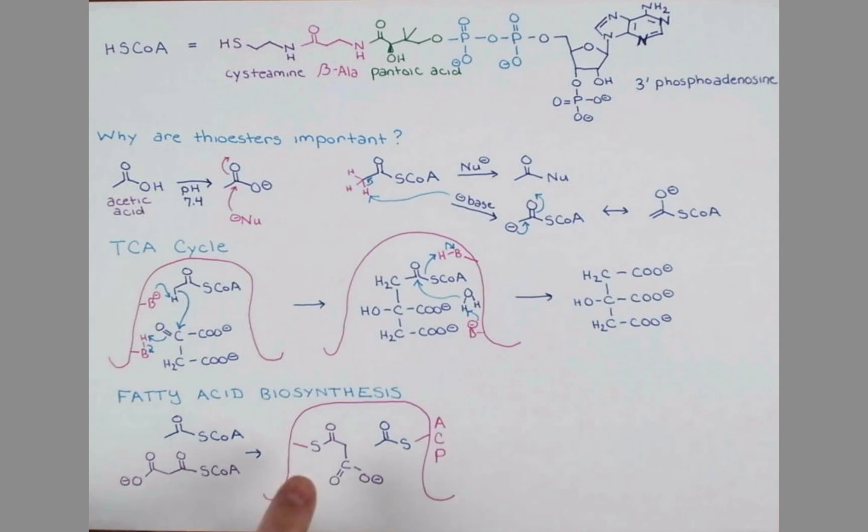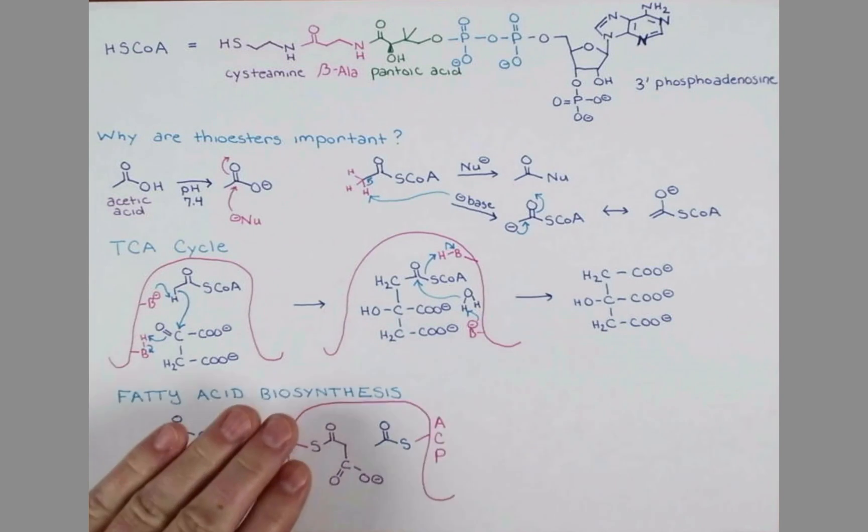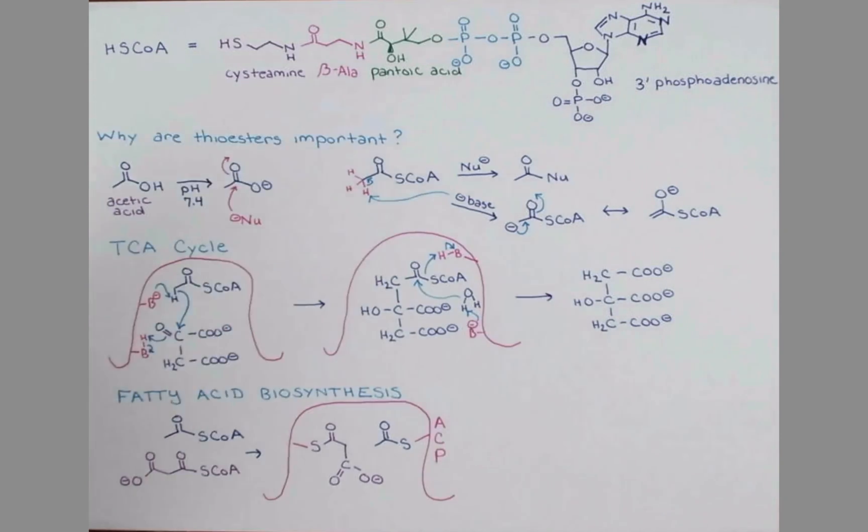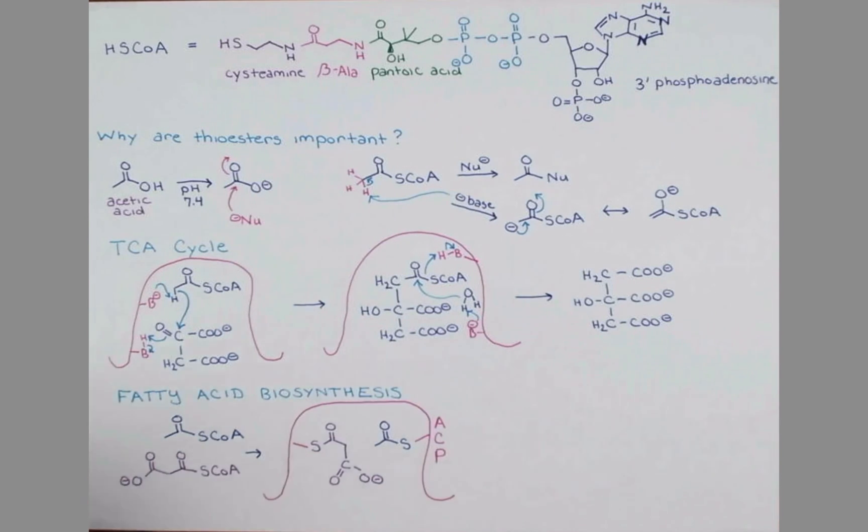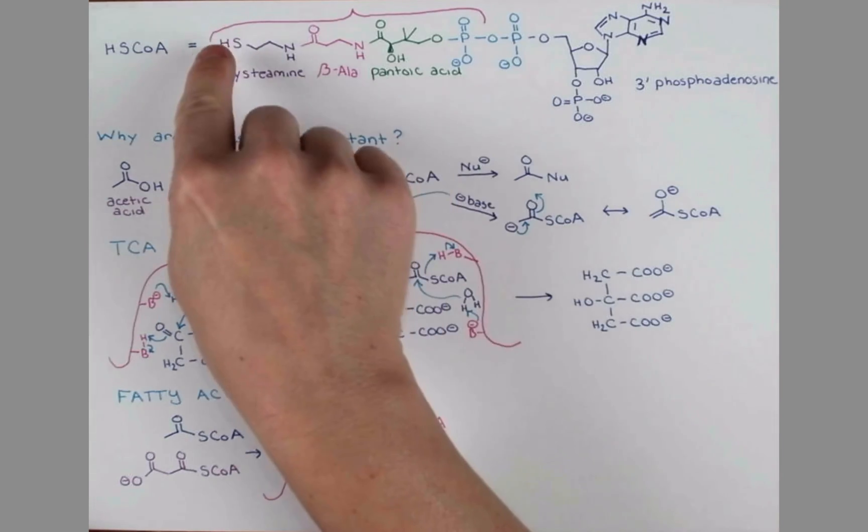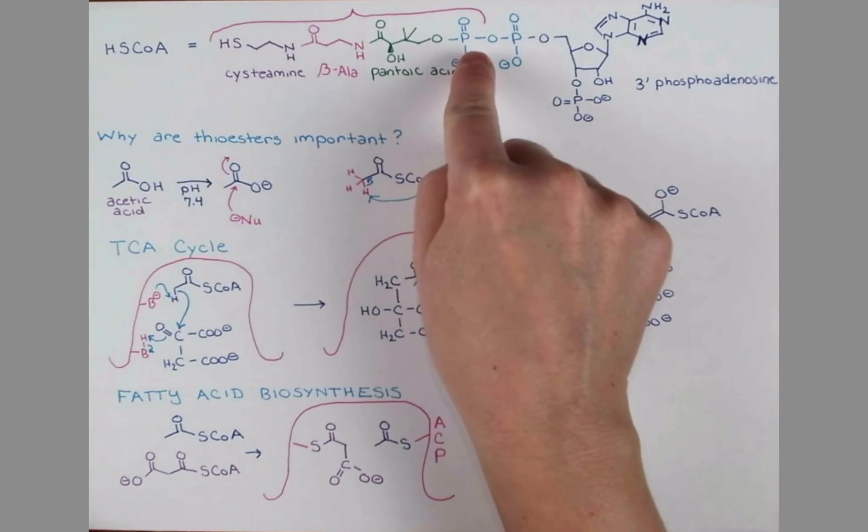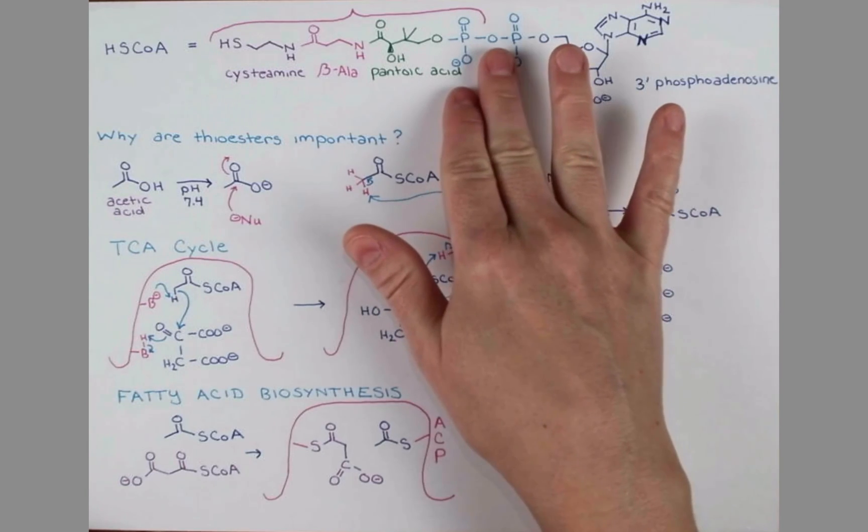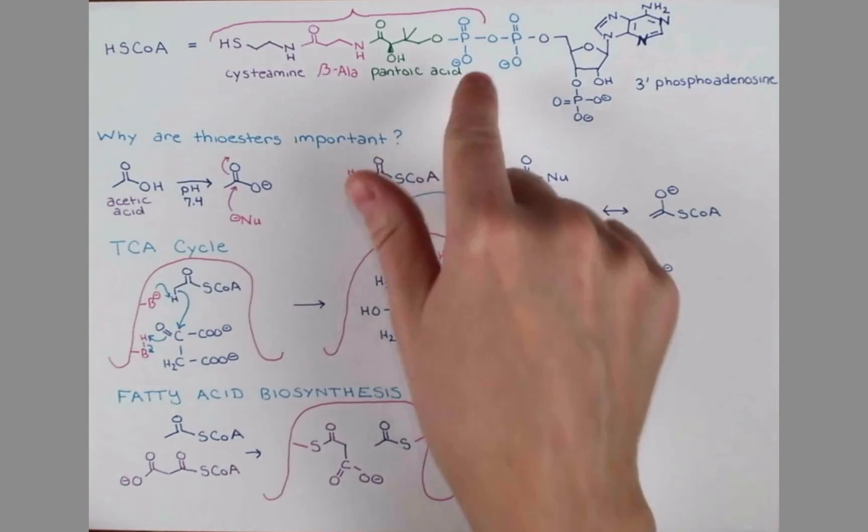The interesting thing about this is the enzyme-bound sulfur donor is super similar to coenzyme A itself. This sulfur-containing group is a phosphopantetheine, so our phosphopantetheine unit extends all the way over to this phosphate group, so incredibly similar to coenzyme A itself.